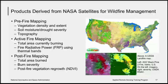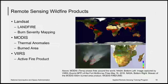During a wildfire event, satellite imagery is used to monitor wildfire status, including the location of the wildfire front as well as the total area currently burning. After a wildfire, satellite imagery is also used to determine total area burned and the severity of the fire. Products useful for wildfire applications are primarily available from Landsat, MODIS, and VIIRS.